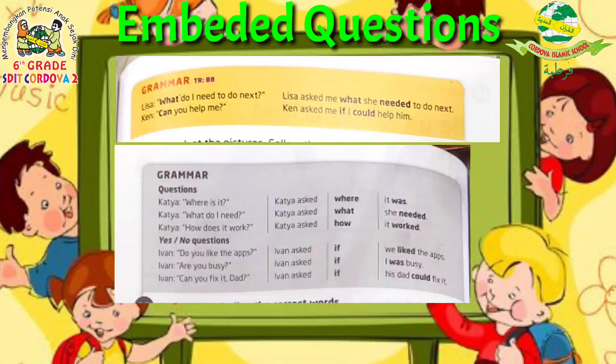There is a question from Lisa. Lisa asked: 'What do I need to do next?' — Lisa wants to know what she needs to do next. The embedded question then becomes: 'Lisa asked me what she needed to do next.' Look at the difference.